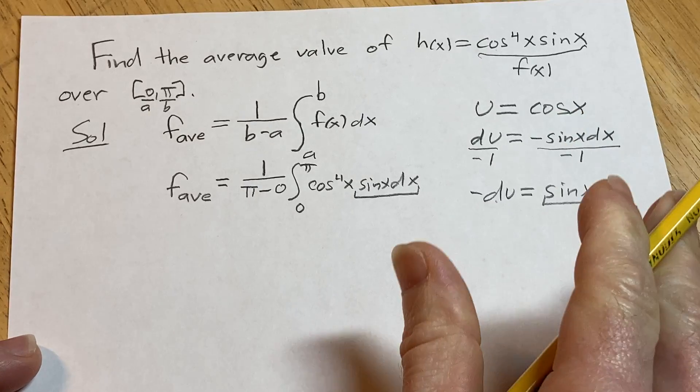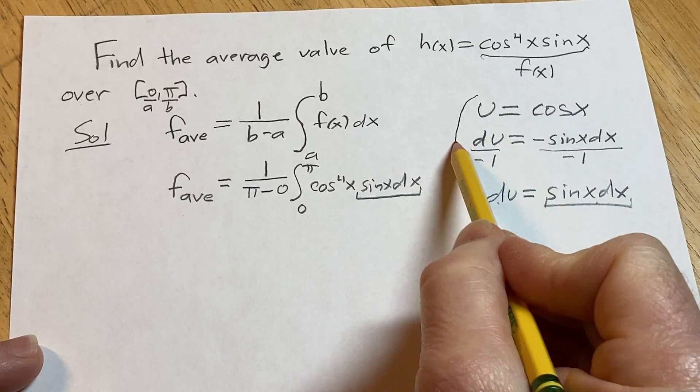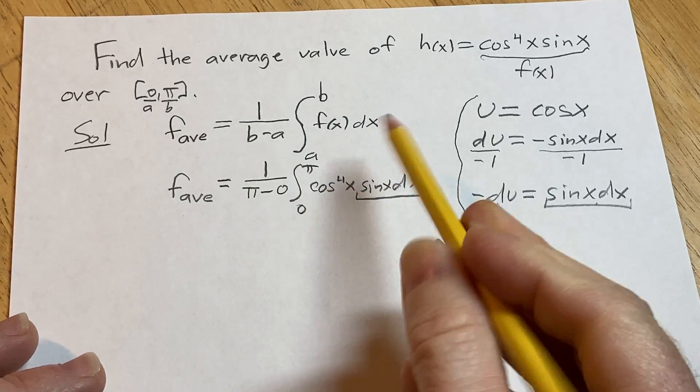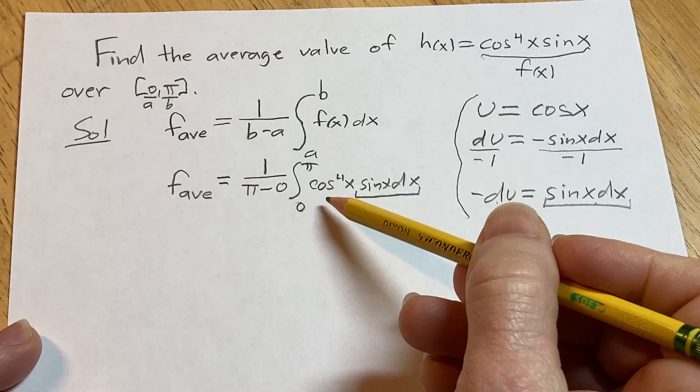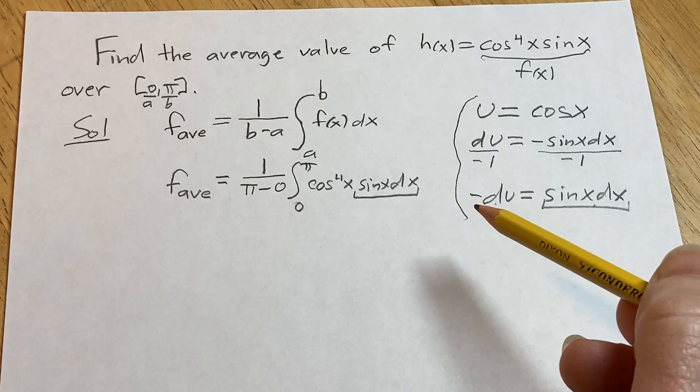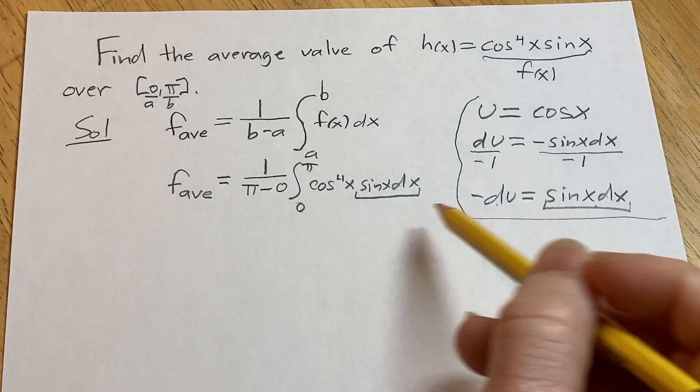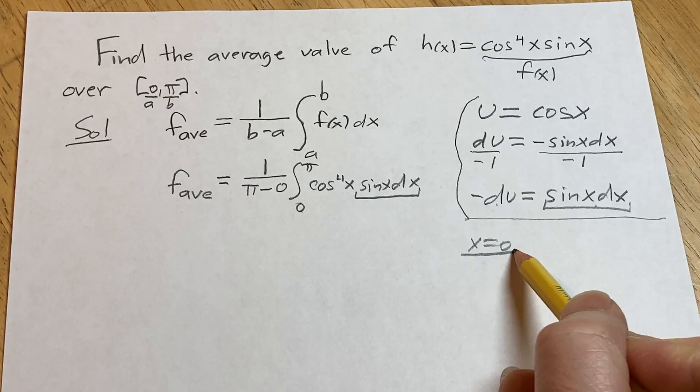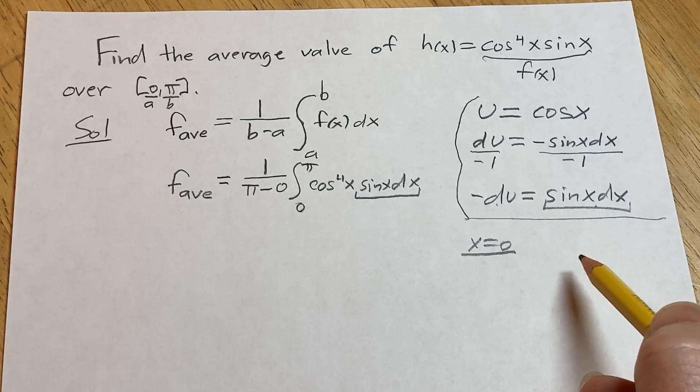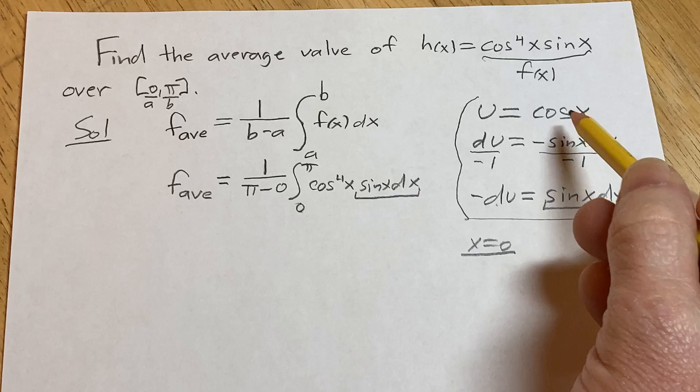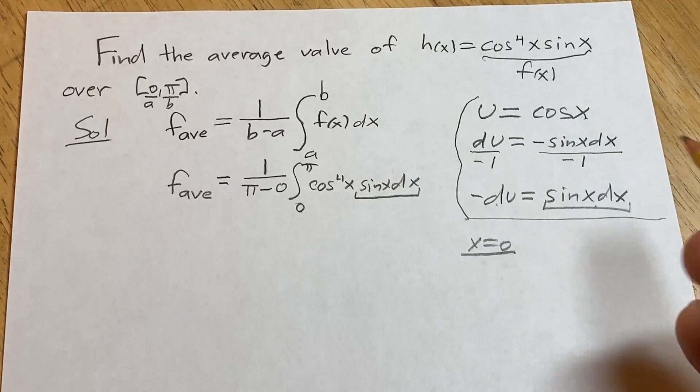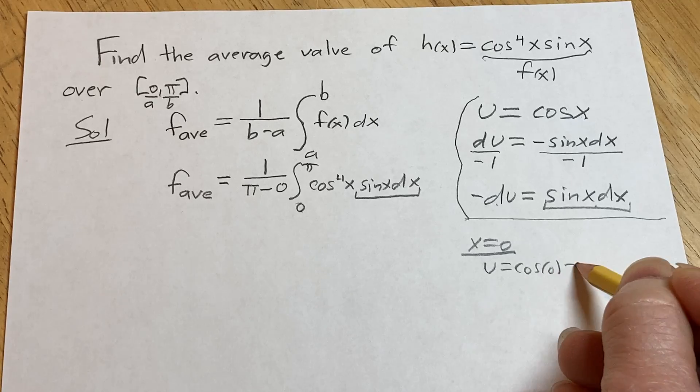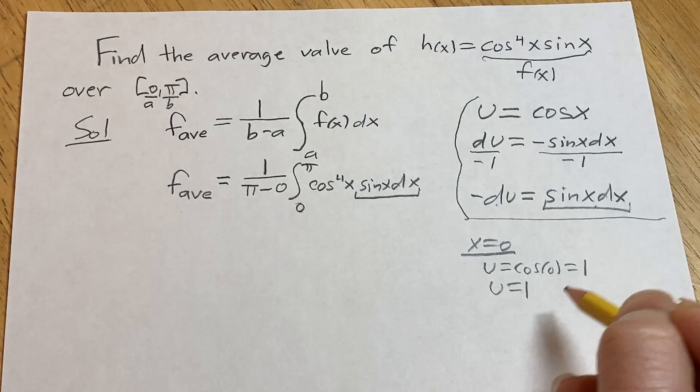Now there's something else we have to do. Because we made a u substitution and we have a definite integral that means we have limits of integration. These are x limits of integration. We have to turn them into u limits. So I like to do that down here on the side and carefully show my work. So when x is 0, I underline it just for clarity. What is the value of u? So you take your x value and you plug it in here into your equation that defines u. So u is equal to the cosine of 0, which is equal to 1. So I'm going to write it again, u equals 1, just for clarity.